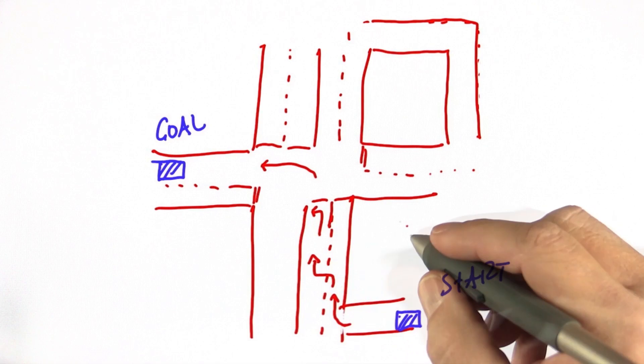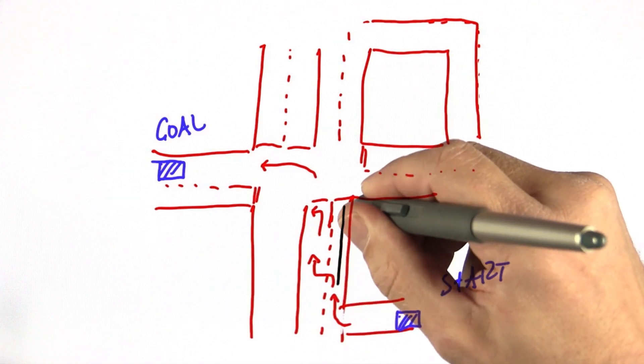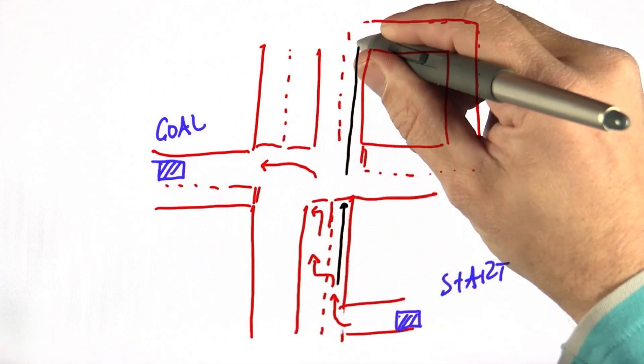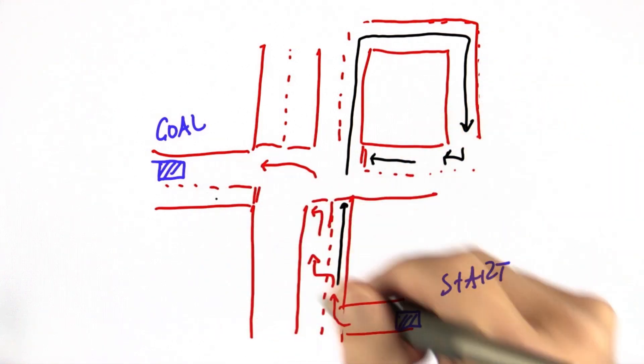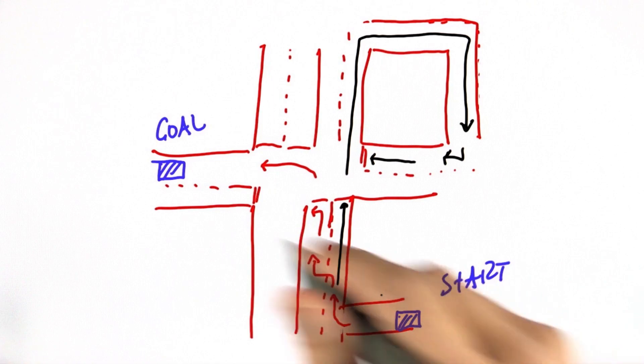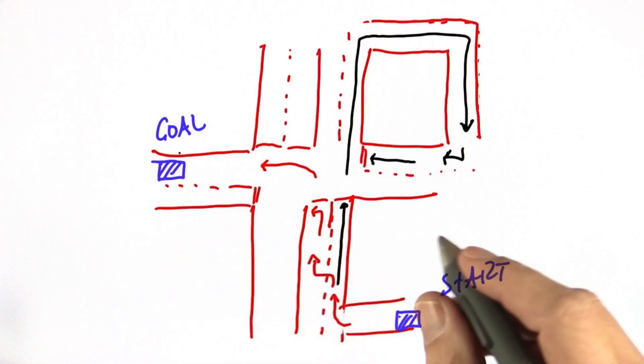So an alternative plan might be to go straight over here, take the detour around the block, and then go straight for the target location. The process of finding a path from a start location to a goal location is called planning.